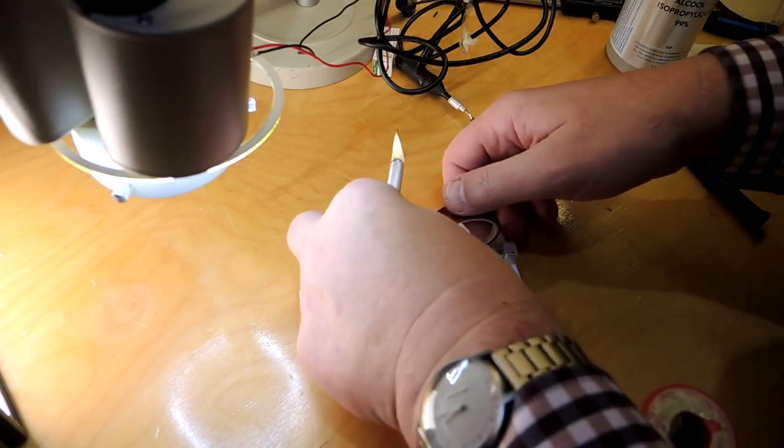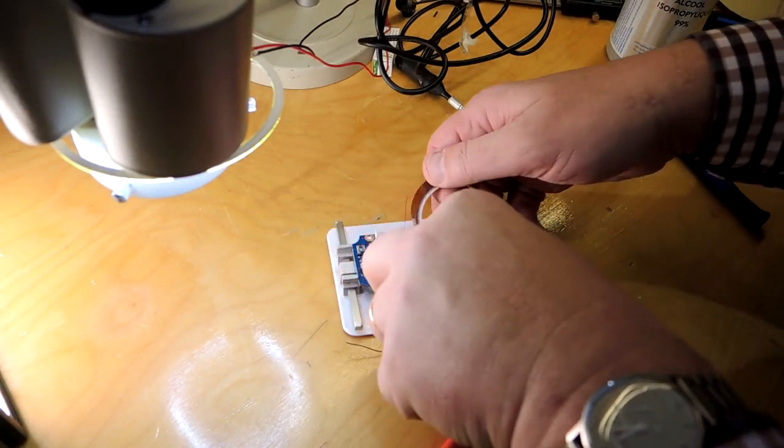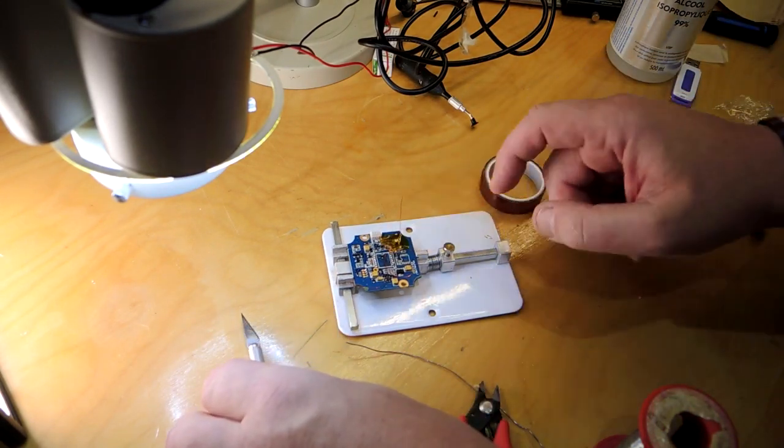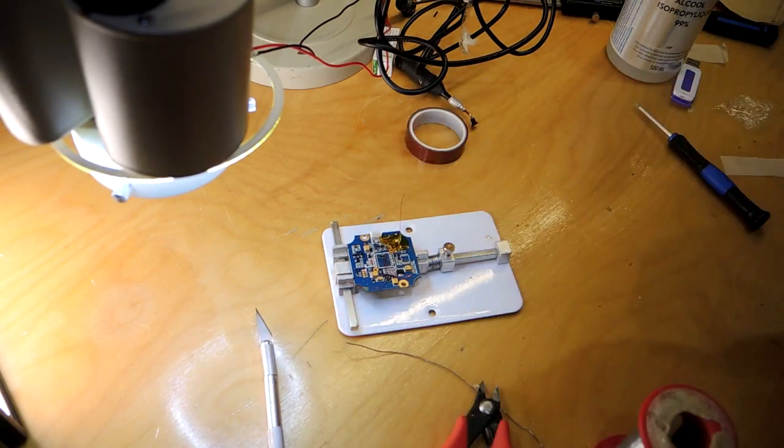The only thing I often do is I put down some Kapton tape and tape the wire down. That seems to help, because if you do try to wrench the wire too hard, of course it will eventually come off because it's only about half a millimeter of solder holding the wire on.